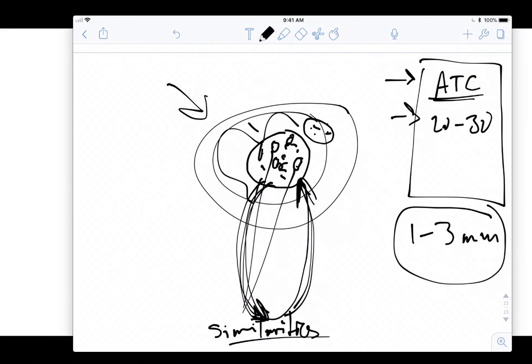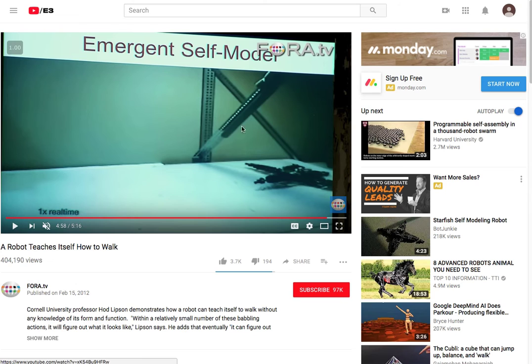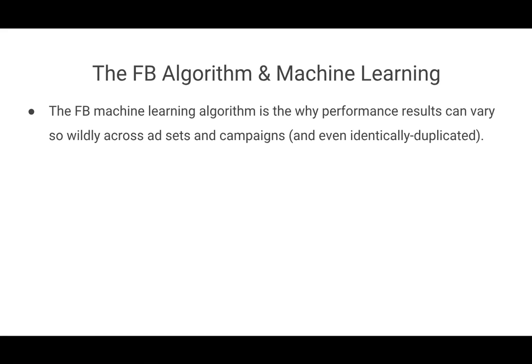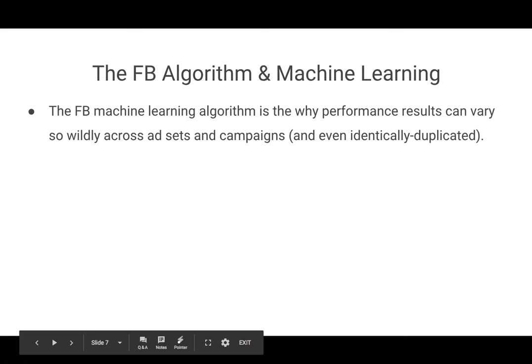At a very high level, this is how the Facebook machine learning algorithm works. The best way to visualize this is to remember the robot teaching itself how to walk. This concept of machine learning in the Facebook algorithm is the reason why performance results can vary so wildly across ad sets and campaigns — even if those ad sets have been identically duplicated. There is an element of randomness to the initial audience that the algorithm targets. Sometimes it strikes a jackpot cohort of people who respond very favorably to the ad, allowing it to build similar audiences and target people very likely to respond positively.